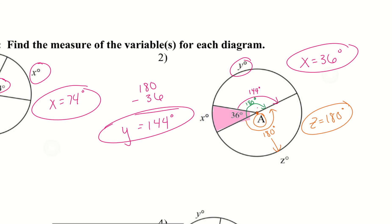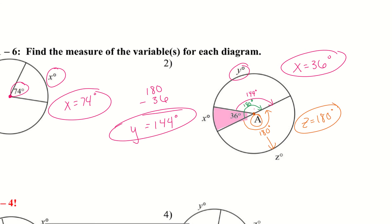So there are a couple things we're looking for: what is the measure at the center going out to the arc, and if we have any straight lines, how can we use that — either do subtraction or say it's the whole 180-degree measure, like we did with z.